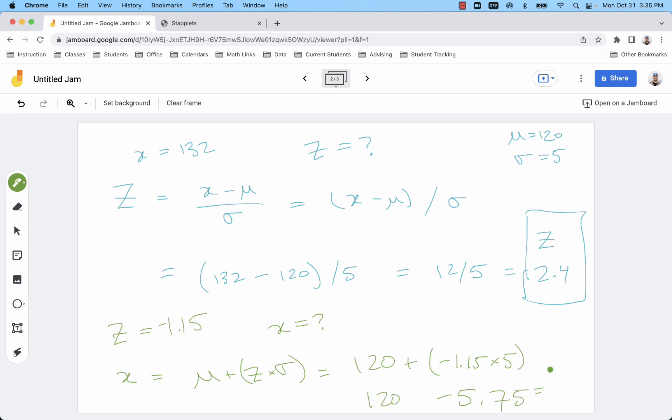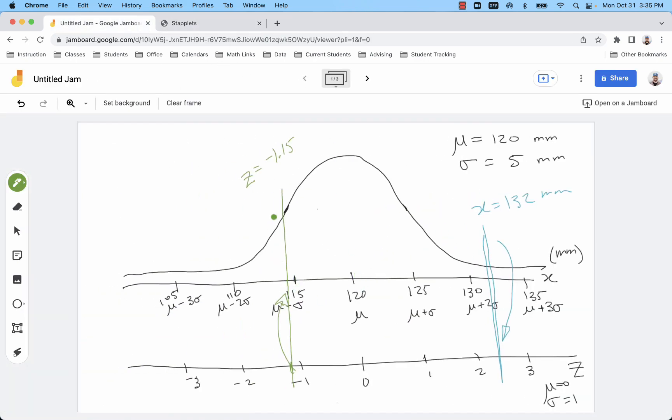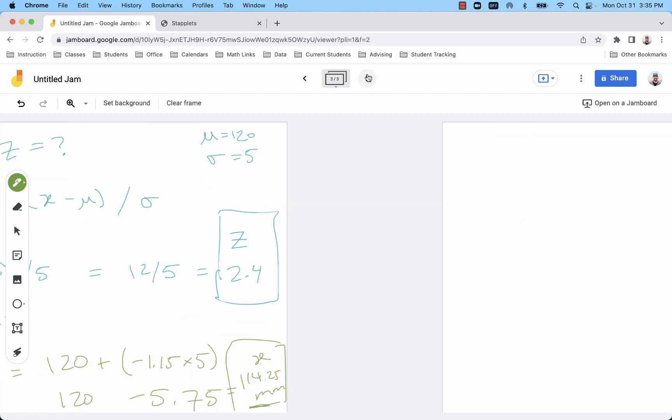And that's going to equal out to 114.25 for my X in millimeters. So we can count that one too. If I go 1 and 15 hundredths of a standard deviation to the left, you can see it's 1.15 on the Z scale, it's 114.25 on the X scale. That is how we convert between X and Z.